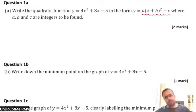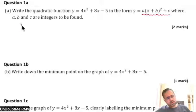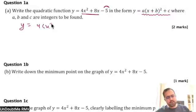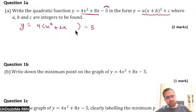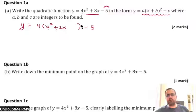Whenever we have to take 4 outside, we'll just focus on the first two terms. Don't think of the last constant term for now. So it will be x squared plus 2x, and then minus 5 is standing outside. Now, what should I write here so that the whole bracket becomes a perfect square?